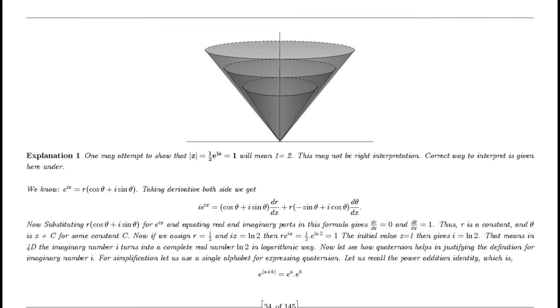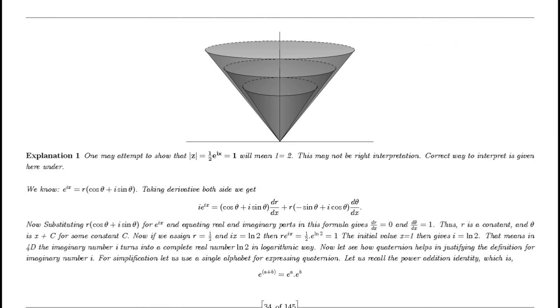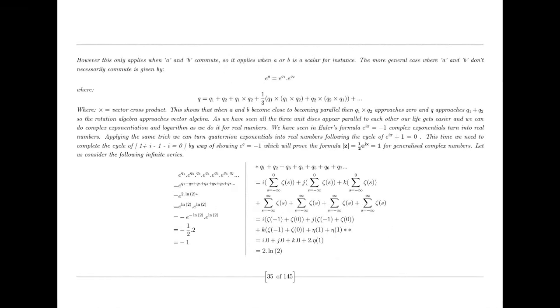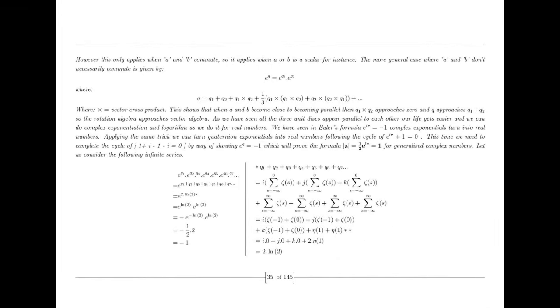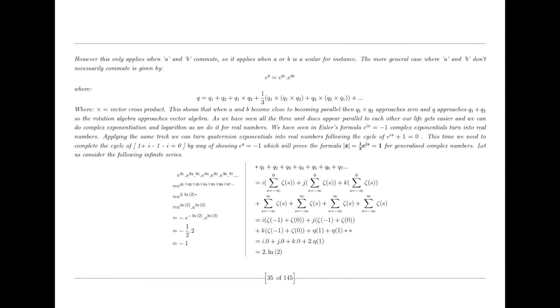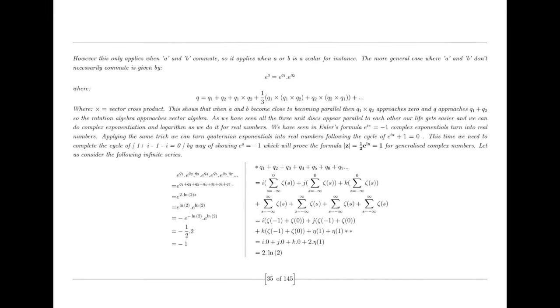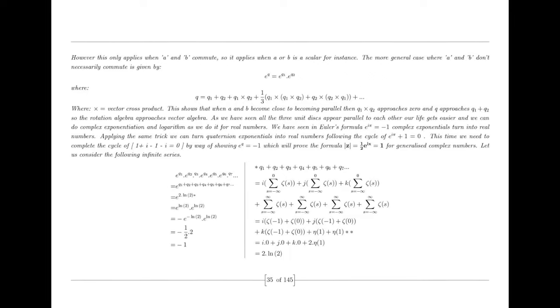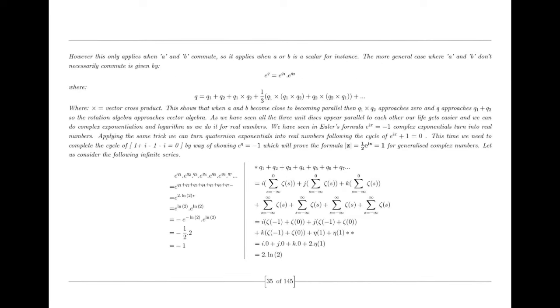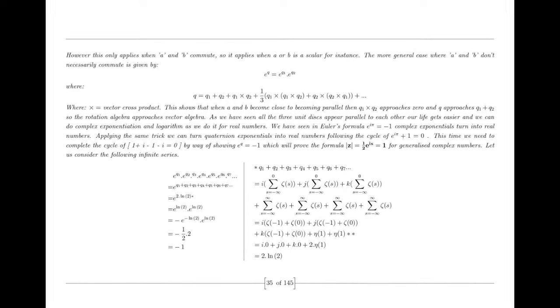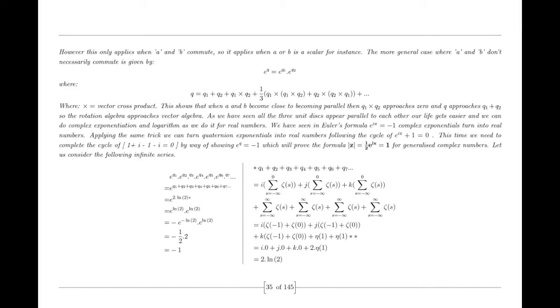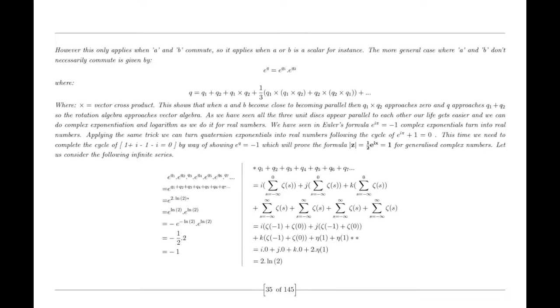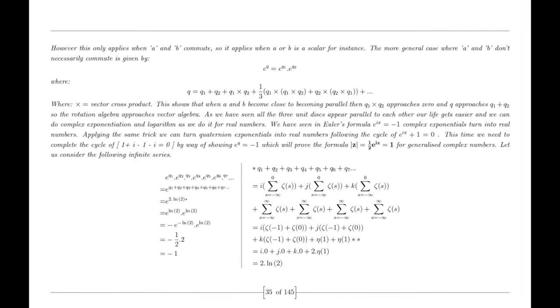For example, let's consider the twin prime conjecture, which states that there are infinitely many prime numbers that differ by 2. To approach this problem, we can utilize the prime number theorem and the dual nature of numbers. By invoking the prime number theorem and considering the asymptotic limit of prime numbers, we can show that there will always be infinitely many twin primes with a prime gap of 2. This can be seen as a minimal proof for the twin prime conjecture.